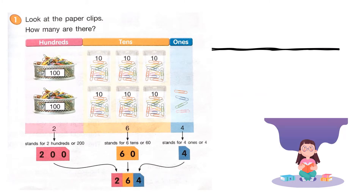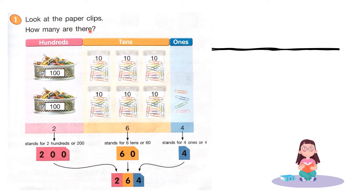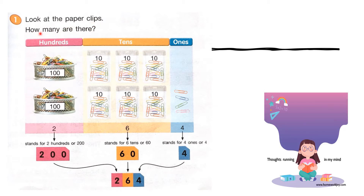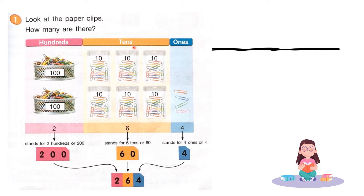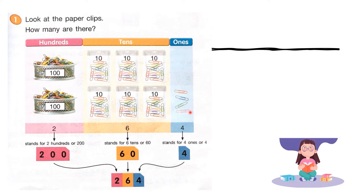Look at the paper clips. Can you follow me? How many are there? We will count, starting from 1s, 10s, 100s. We will count in 1s. How many paper clips in 1s? Let's count: 1, 2, 3, 4.